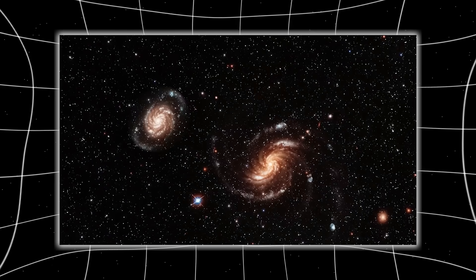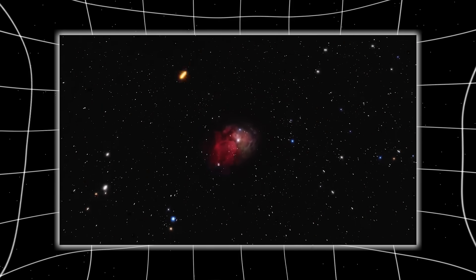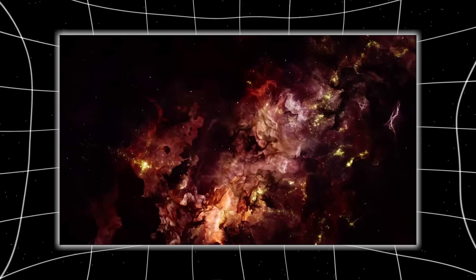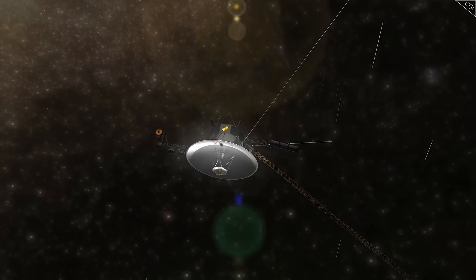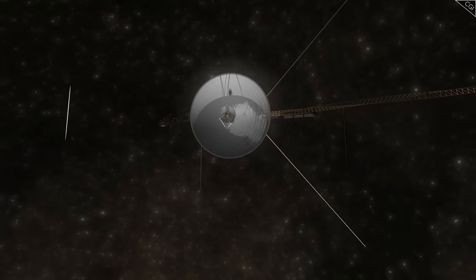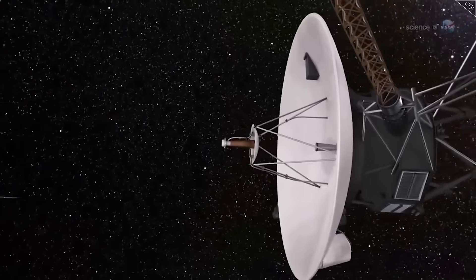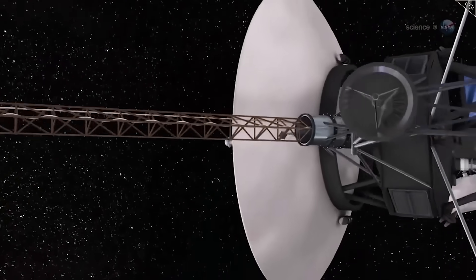And Voyager, old, slow, quiet, analog Voyager, was the perfect ear to catch the whispers. Its outdated systems lacked the digital noise of modern spacecraft, making it uniquely capable of detecting signals others might miss.